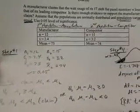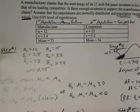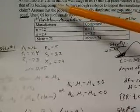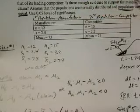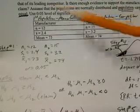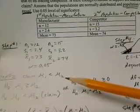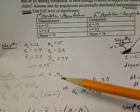In step number two, we need to identify the claim and write it in symbolic form. The manufacturer's claim is that the watt usage of its 17-inch flat panel monitors is less than that of its leading competitor. So the manufacturer, μ1, is less than μ2. The population mean of the manufacturer is less than the population mean of the competitor.